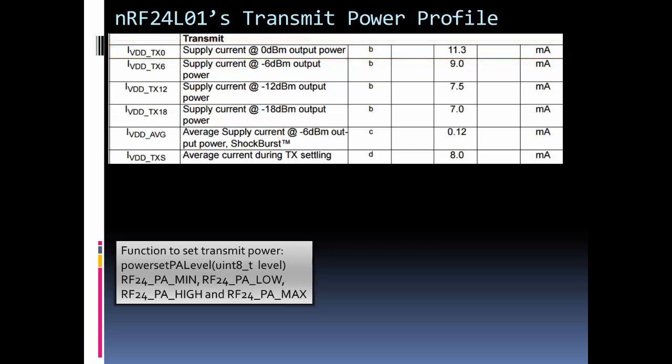And so that's going to draw the most current, 11.3 milliamps. And then from there we go down and it draws less current. Of course, whichever one you choose here is going to be related to the distance you can communicate with another node or another module. If you have devices that are close together, you can play with these lower power ranges and save further power.